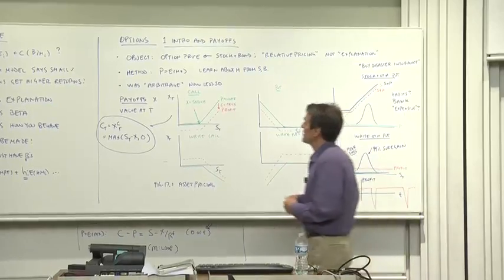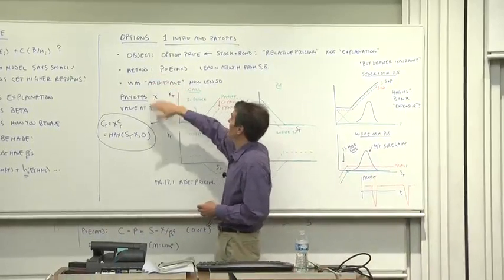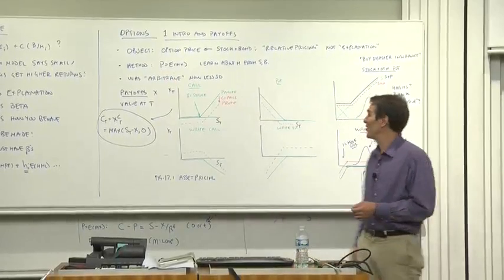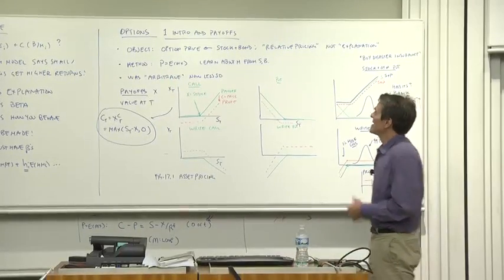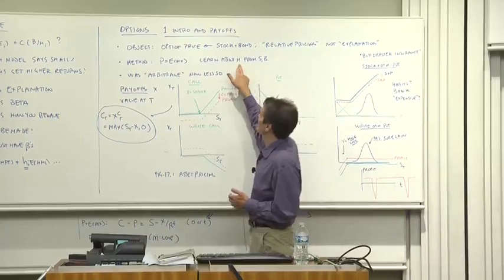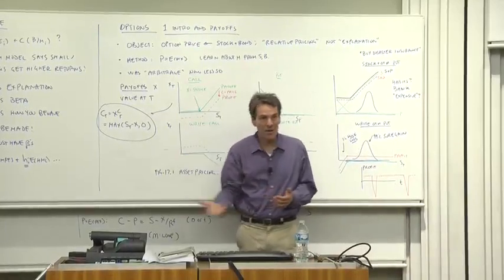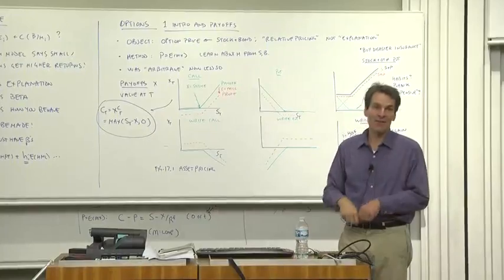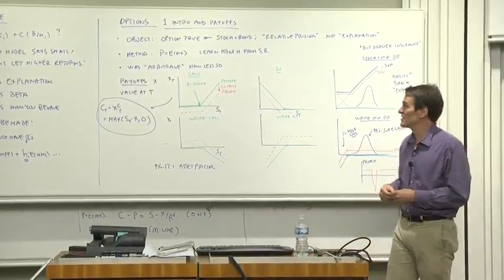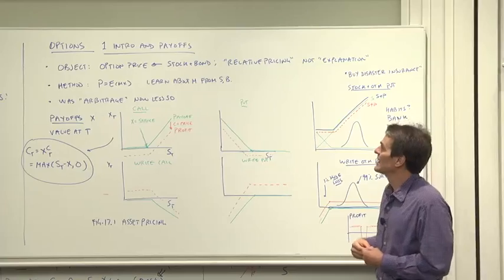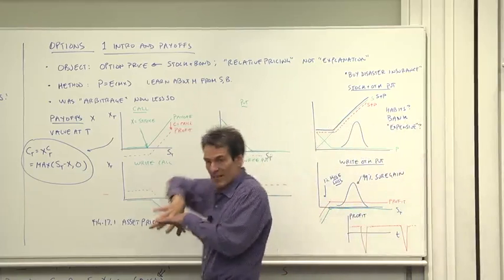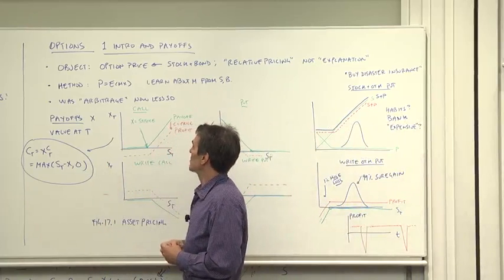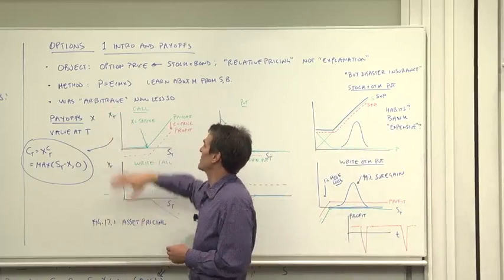The method, as you might not be surprised, is we're going to use price as expected discounted payoff, just as we have all along. We're going to learn about the discount factor from stock and bond prices rather than from utility functions, consumption, state variables, and so forth. I like that approach because it unifies our thinking about asset pricing, and I think it's also the right way to approach modern asset pricing.